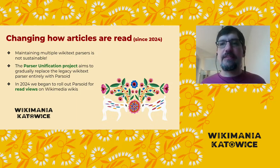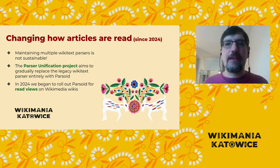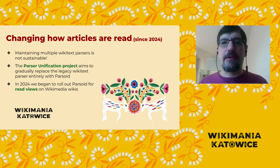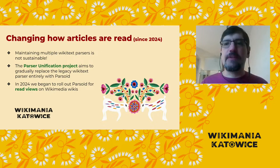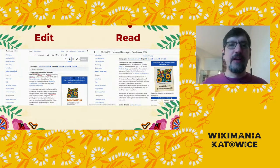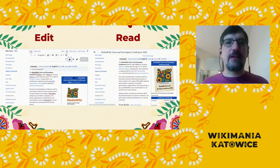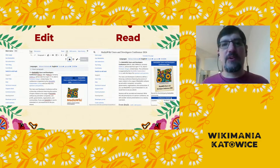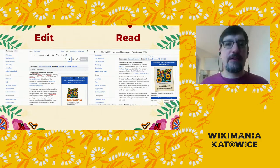Maintaining multiple parsers is not sustainable, and we began the parser unification project to gradually replace all the uses of the legacy parser with Parsoid. In 2024 — this year — we began to roll out Parsoid for readviews, to generate the HTML you see when you visit an ordinary article page to read it. On the left is Visual Editor — the what-you-see-is-what-you-get article editor — which has been generated from Parsoid from the start. On the right is what a reader sees, which has been generated by the legacy parser and is now transitioning to Parsoid.